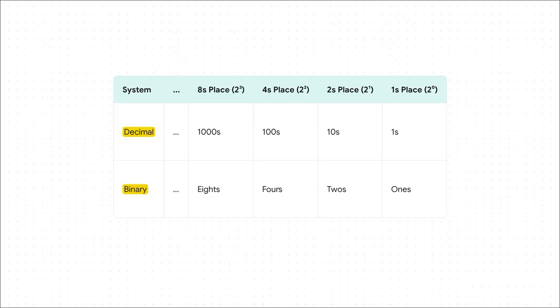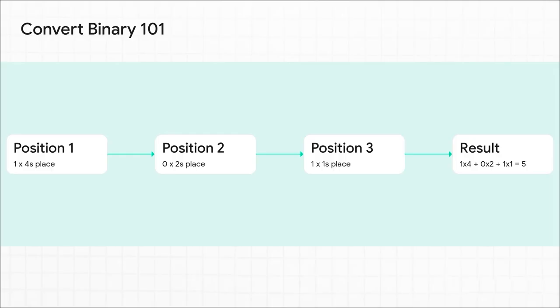And this is where it all starts to click. You know how in our system, each place value is a power of 10 — we have the ones place, the tens place, the hundreds, and so on. Well, binary works the exact same way, but with powers of 2. So you have the ones place, the twos place, the fours place, the eights place, the sixteens place — each spot is just double the one before it. Let's make this real with an example. Take the binary number 101. Reading from right to left, we have a 1 in the ones place, a 0 in the twos place, and a 1 in the fours place. So you just add up what's turned on: 1 four, plus 0 twos, plus 1 one, gives us the number 5. And there you go — a string of on-off switches becomes a number we can all understand.